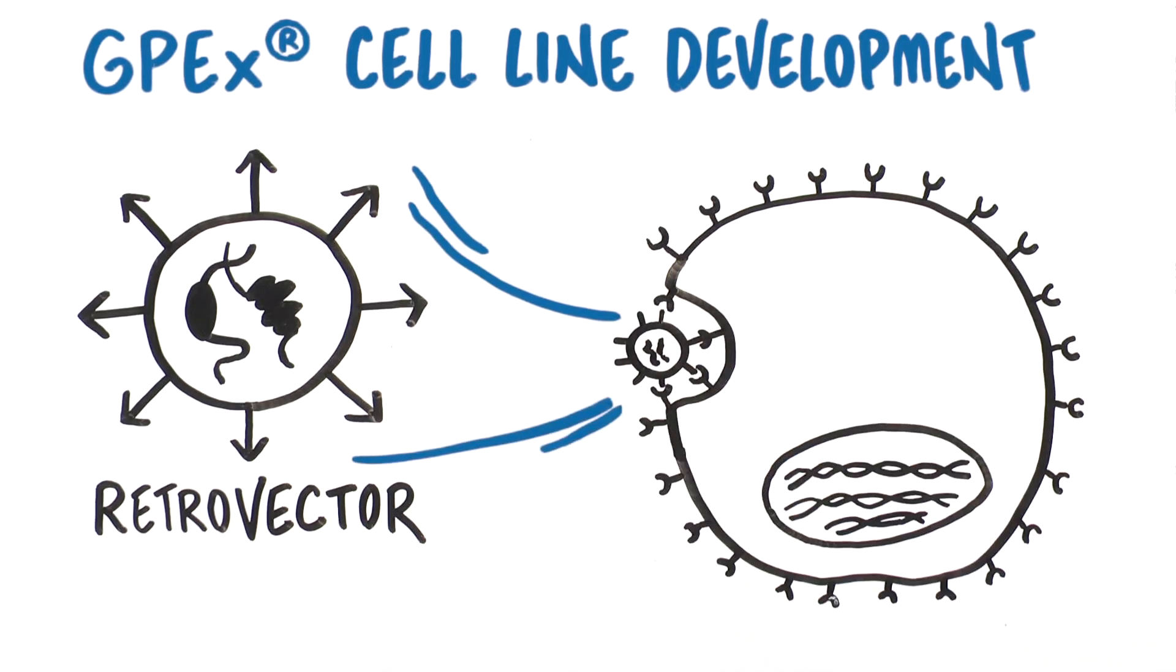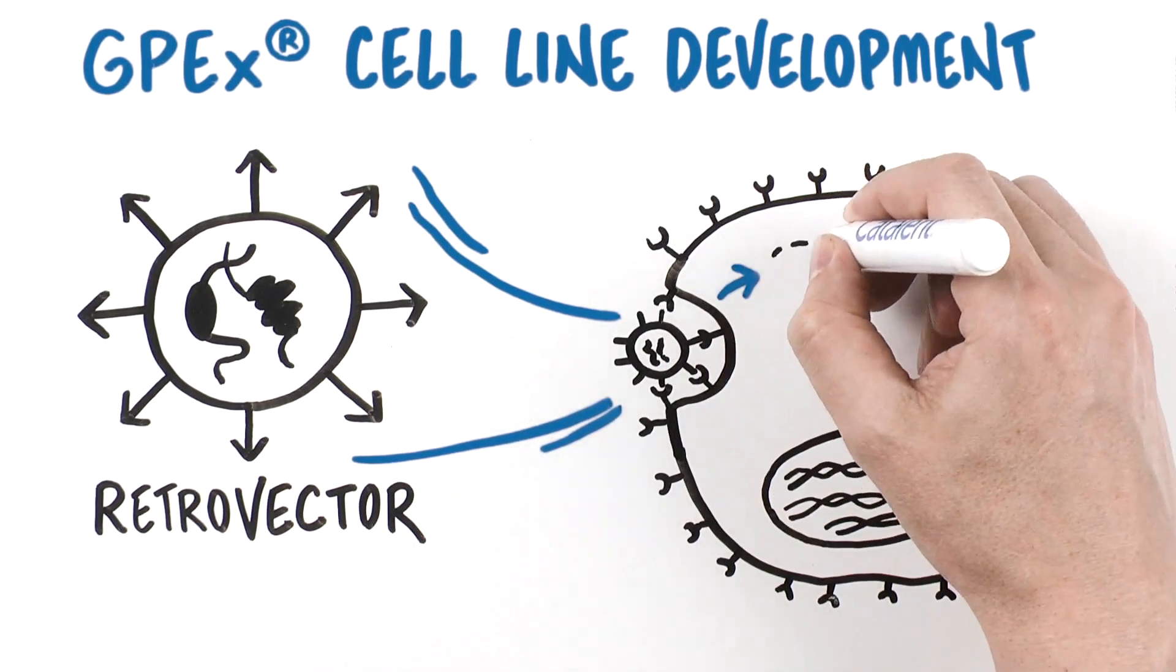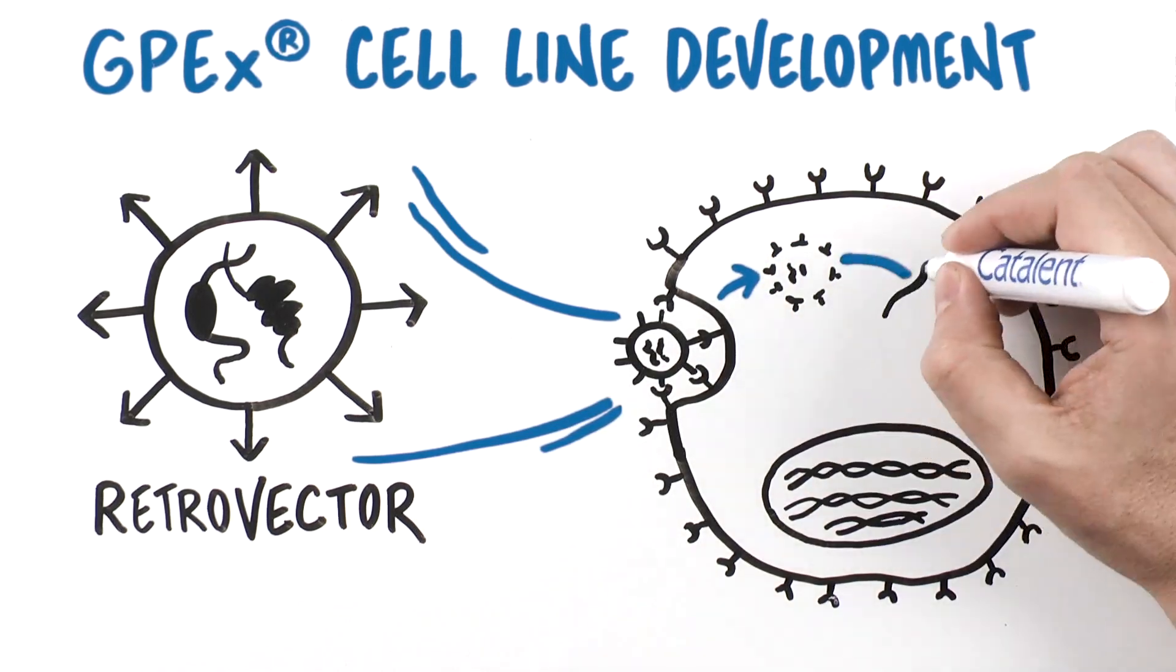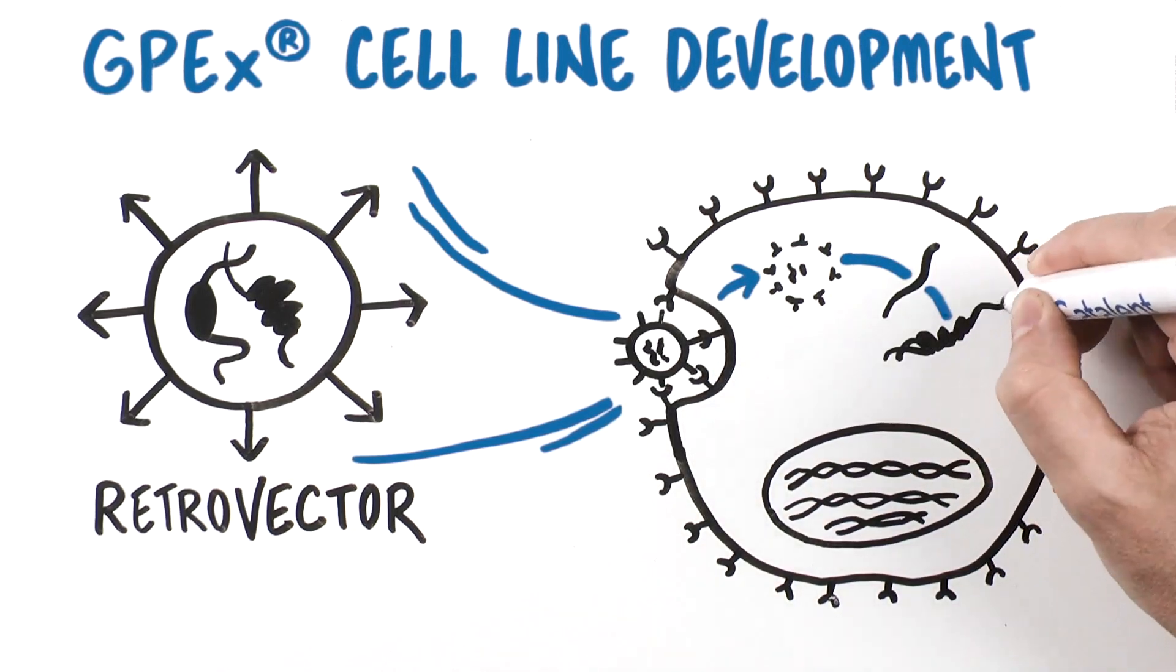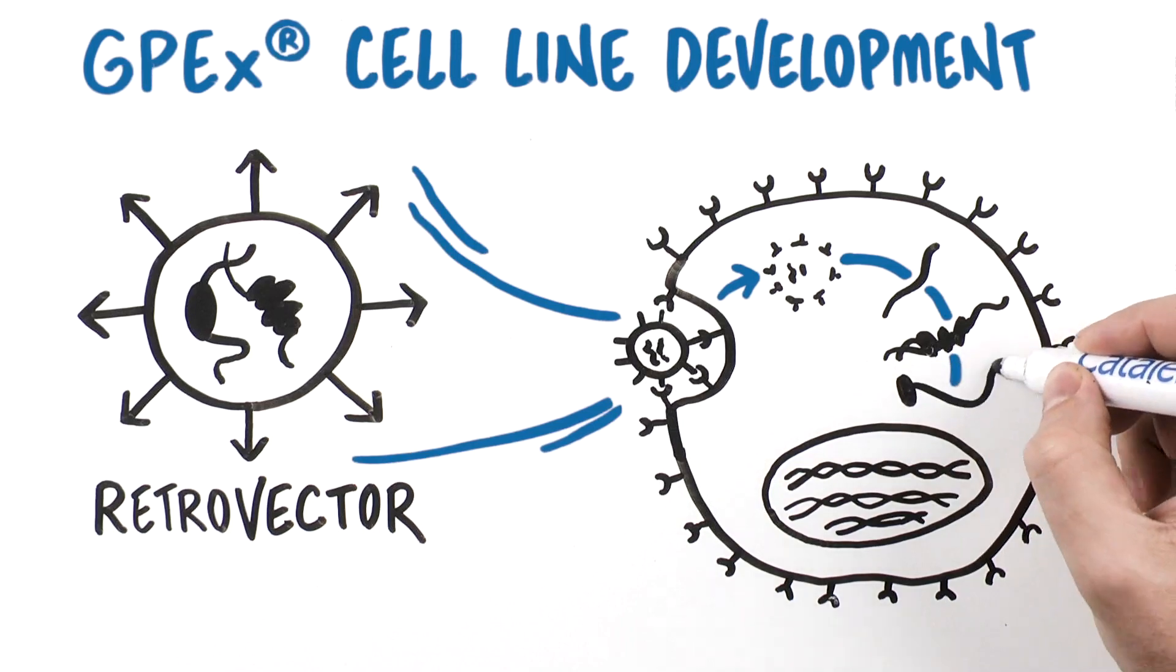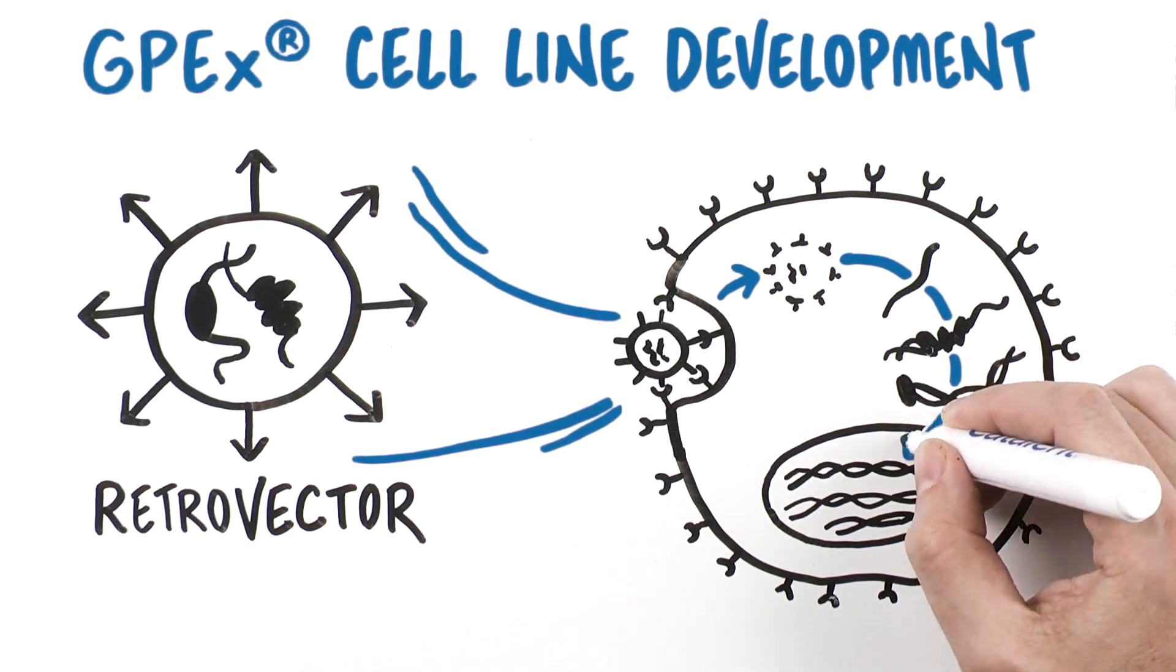binds to it, and is internalized. Once the gene is inside the cell, it is reverse transcribed to DNA and integrated stably into the genome, resulting in high expression and high genetic stability.